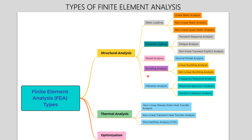Vibrational analysis has three types: frequency response analysis, response spectrum analysis, and random vibrational analysis. Frequency response analysis is used only in the frequency domain, calculated by solving the characteristic dynamic equilibrium formula found in harmonic loading conditions. Response spectrum analysis finds the maximum response of a structure under loads caused by earthquakes. Random vibrational analysis is based on probability and predicts the range in which a response will occur when power spectral density is applied.